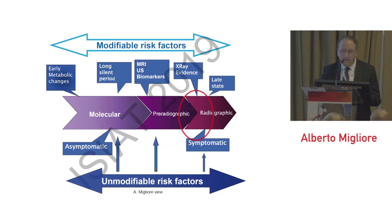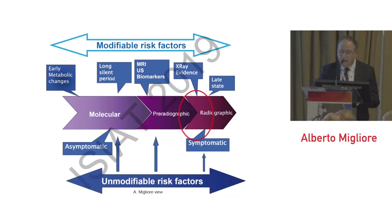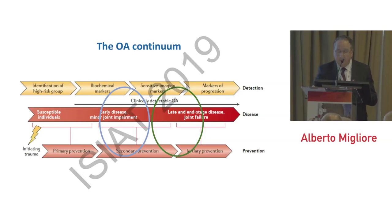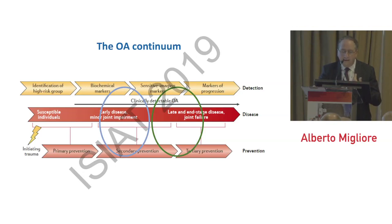For early osteoarthritis, we know that osteoarthritis has a very long disease period, with a symptomatic period characterized by molecular changes, then pre-radiographic, and then radiographic asymptomatic stages. There is identification of high-risk group subjects and post-initiating trauma, then primary prevention, secondary prevention, and tertiary prevention. Usually we treat patients in the later stage, but we have to move to early disease, characterizing it as minor joint impairment, and investigate which is the window of opportunity for each treatment along this process.